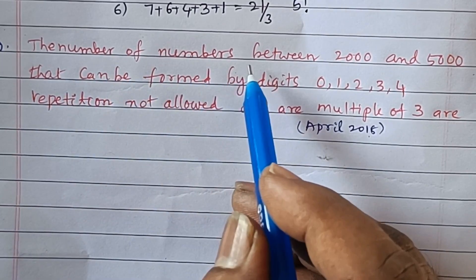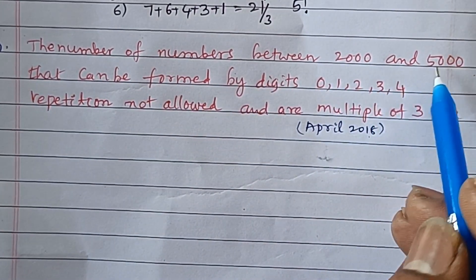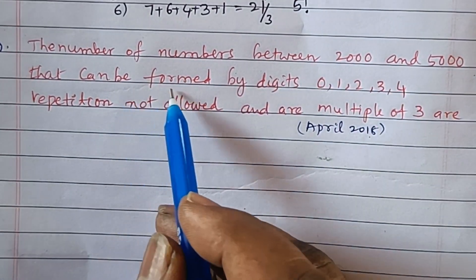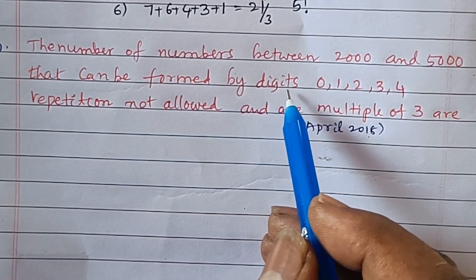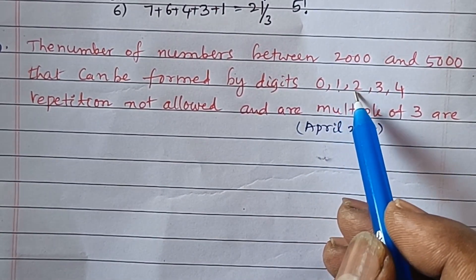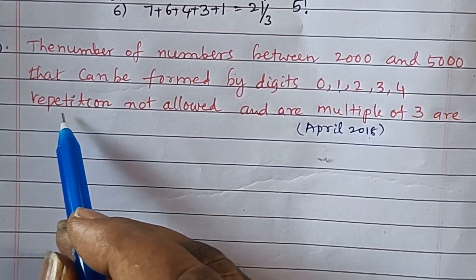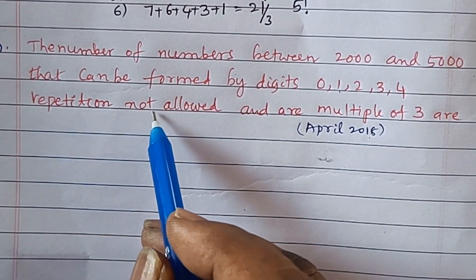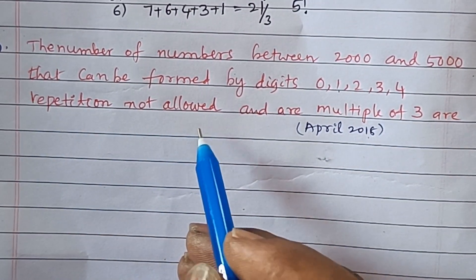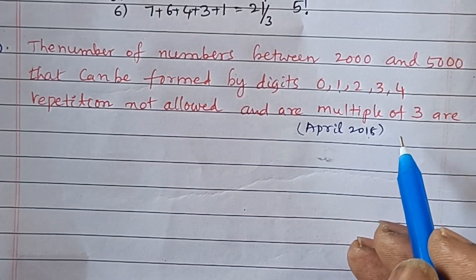The number of numbers between 2000 and 5000 that can be formed by using the digits 0, 1, 2, 3, 4, repetition not allowed, and are multiples of 3.